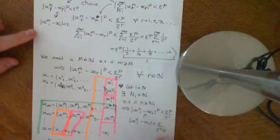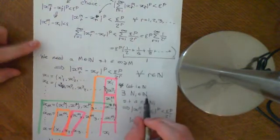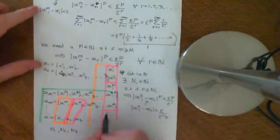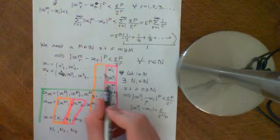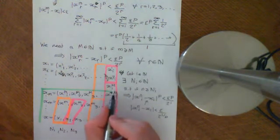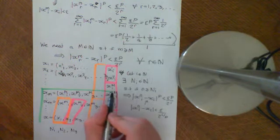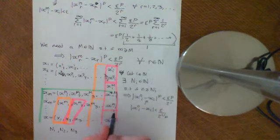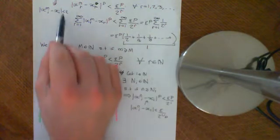Now, basically, this argument about the fact that all of these termwise sequences converging means that I can find a point in each of these termwise sequences, so that if I go to that point, or I'll pick a term beyond that point in the termwise sequence, then I can get this statement to hold.